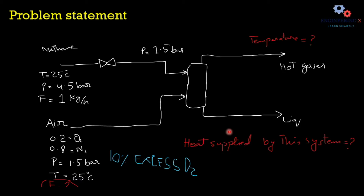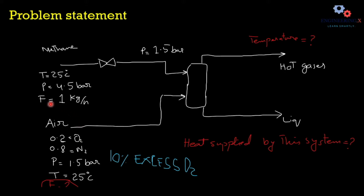Here is the combustion system in which fuel — pure methane — is being fed on one stream, and the second stream is air. Both stream inlet conditions are given: methane is entering at 25°C with a flow rate of 1 kg per hour. For the air stream, composition, temperature, and pressure are given, but the mass flow rate is not given — we have to find out through calculation how much air is required to completely burn 1 kg per hour of methane.